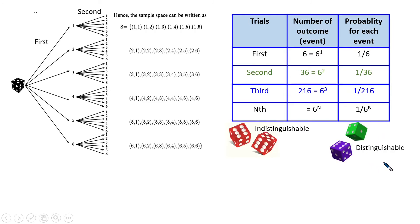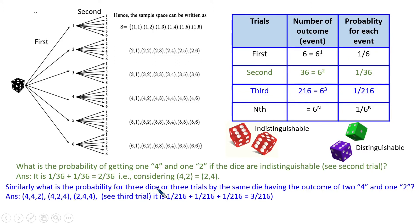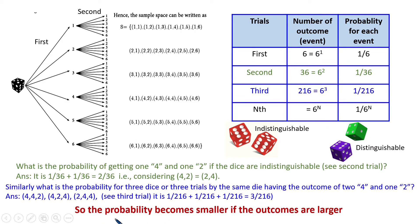These probabilities are for the distinguishable die. If it is indistinguishable: what is the probability of getting one four and one two if the dice are indistinguishable? You see (4,2) or (2,4); if they are indistinguishable, each event has probability one by 36, so you add one by 36 plus one by 36, giving two by 36. Similarly, for three dice or three trials by the same die, the probability of getting four, four and two is three by 216 if they are indistinguishable.